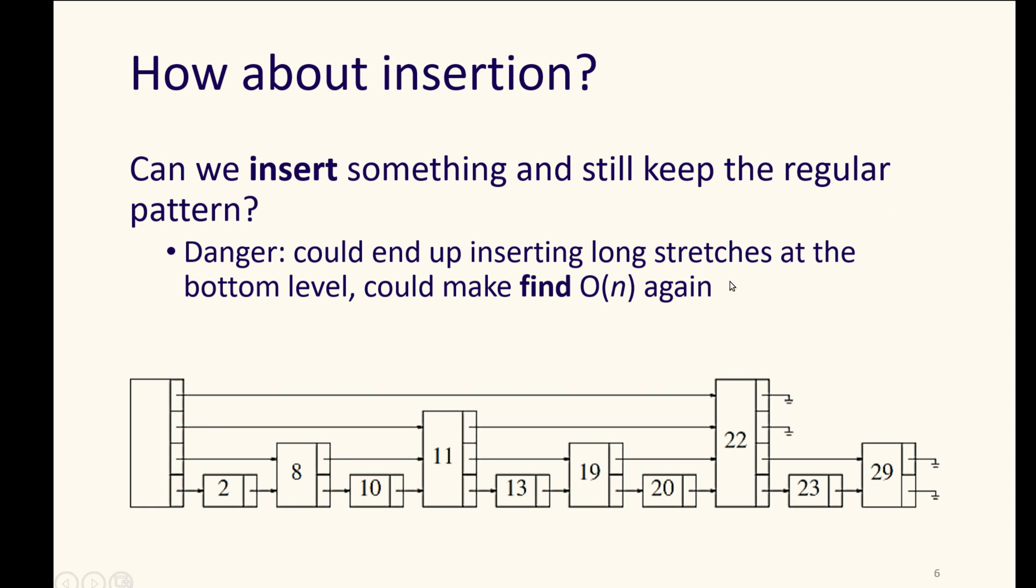We could end up inserting long stretches at the bottom level that might make find O of n again, similar to our bucketed hash tables, where a single bucket might get very long. But if we try every time that we add something new to rehook and to redo those, where our six became a second level thing and eight became a first level thing and we switch them all around, then insert becomes O of n. And we would like to still keep our nice, lengthless performance of quick insertions.